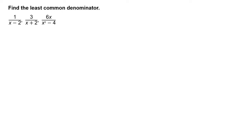Find the least common denominator of 1 divided by the quantity x minus 2, 3 divided by the quantity x plus 2, and 6x divided by the quantity x squared minus 4.